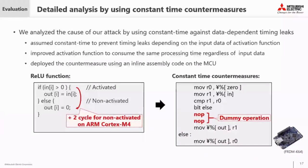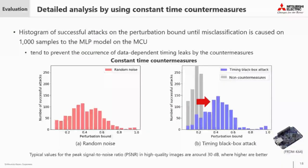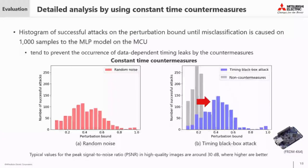We used constant-time processing to prevent timing leaks depending on input data of the activation function. We improved the activation function to consume the same processing time regardless of the input data, and deployed this countermeasure using inline assembly code on the MCU. The histograms show the results for the MLP model on the MCU — the graphs indicate that our countermeasure prevents the occurrence of timing leaks and thus suppresses the attack.